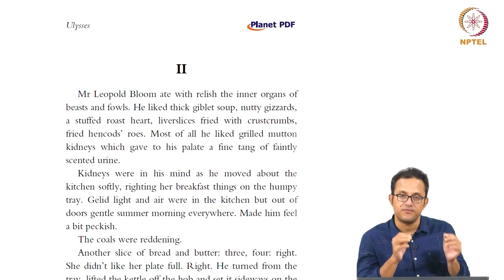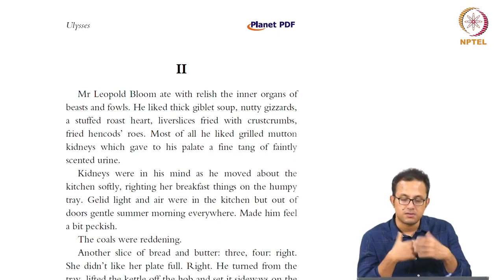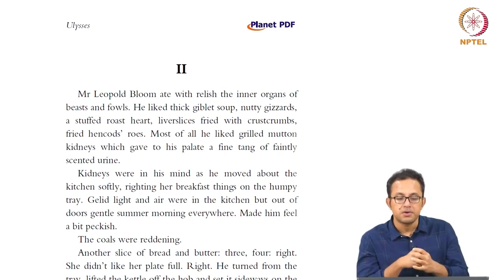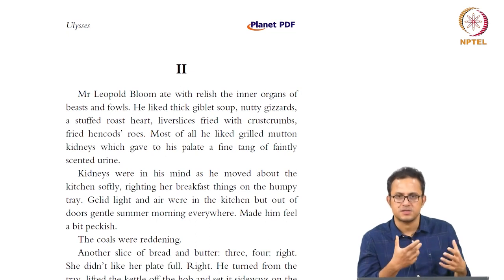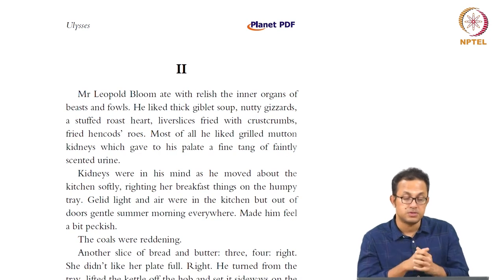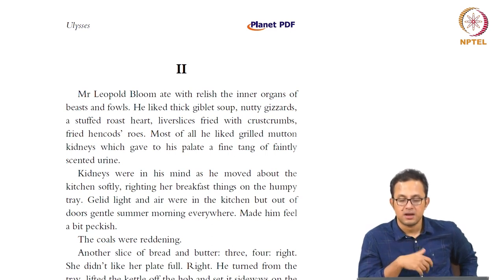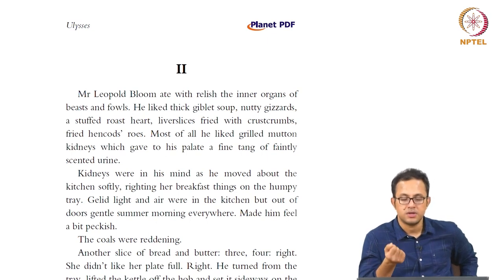The body is foregrounded, the body is displayed, bodily functions are celebrated and constantly described in graphic detail. The excretory system, the digestive system — all are constantly talked about, as if we get inside the inner organs of Bloom himself. Kidneys were in his mind as he moved about the kitchen softly, setting her breakfast things on a tray. There was grey light in the kitchen, but outdoors a gentle summer morning was everywhere, making him feel a bit peckish. Everything around him — the uncouth kitchen, setting up breakfast for himself and his wife — and the gentle summer morning coming in made him hungry.